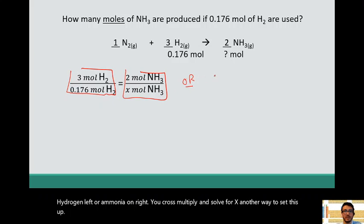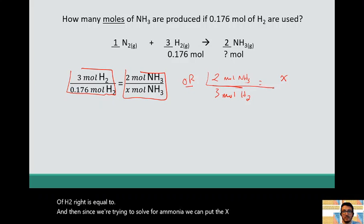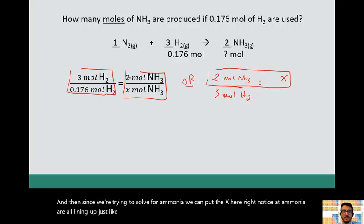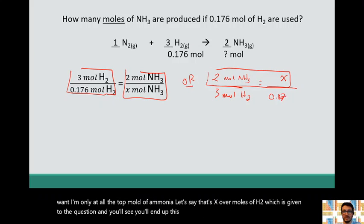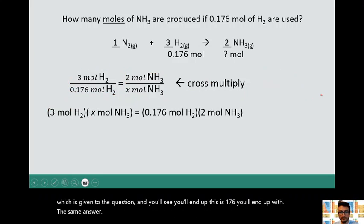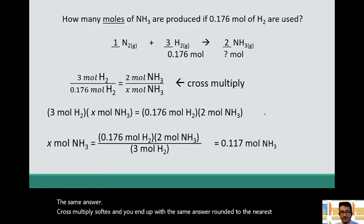Or you can just have 2 mole of ammonia over 3 moles of H2 is equal to, and then since we're trying to solve for ammonia, we can put the x here. Notice that ammonia are all lining up. So just like the other method, which is the same thing, just used a bit differently. You want ammonia all at the top, moles of ammonia, let's say that's x, over moles of H2, which is given to you in the question. And you'll see you'll end up with the same answer. Cross multiply, solve for x, and you end up with the same answer, rounded to the nearest sig fig. Right? That's enough practice on stoichiometry.